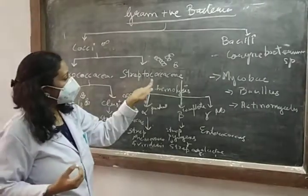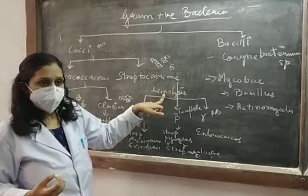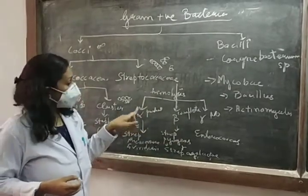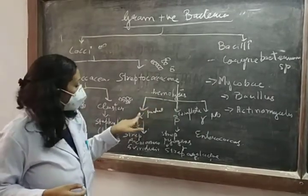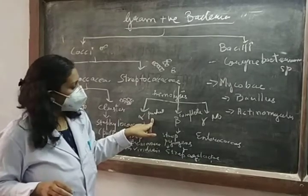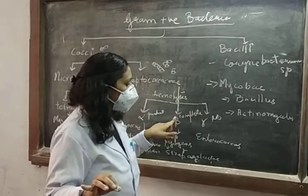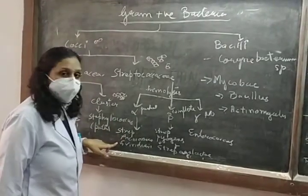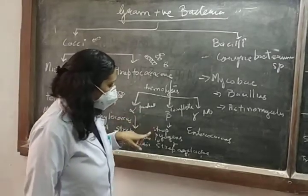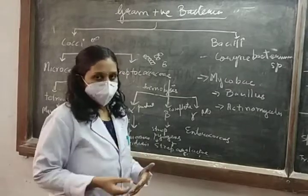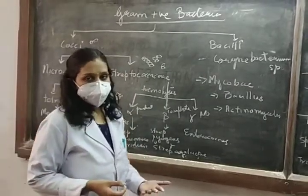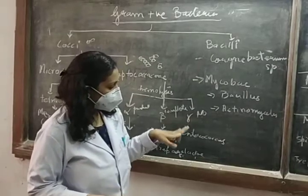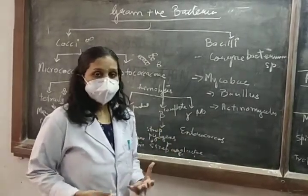Now coming to the Streptococcaceae family. We have divided that family based on hemolysis: there is Alpha, Beta, and Gamma. Alpha hemolysis is seen on blood agar — in Alpha there is partial hemolysis of the blood cells. In Beta, there is complete hemolysis of the cells. In Gamma there is no hemolysis. Examples of Alpha are Streptococcus pneumoniae and Streptococcus viridans. Beta is further classified by the Lancefield classification, with organisms like Streptococcus pyogenes and Streptococcus agalactiae. Gamma has organisms like Enterococcus.